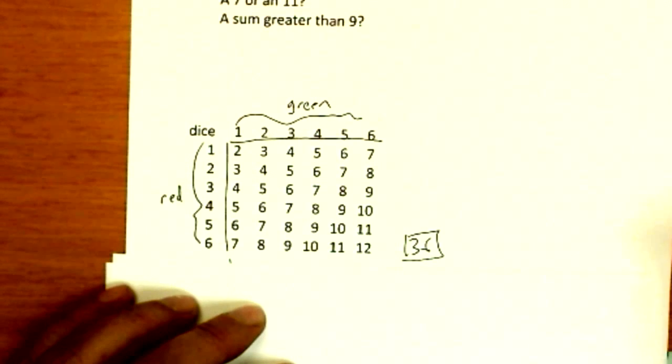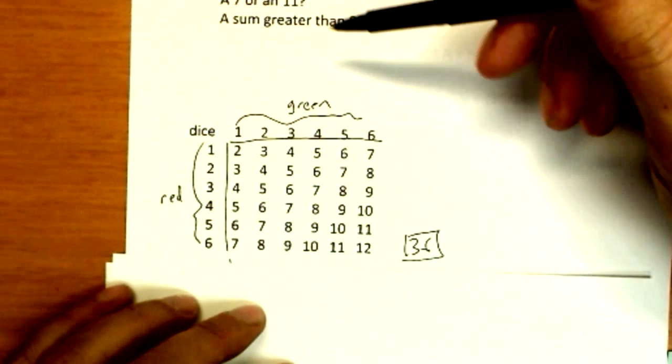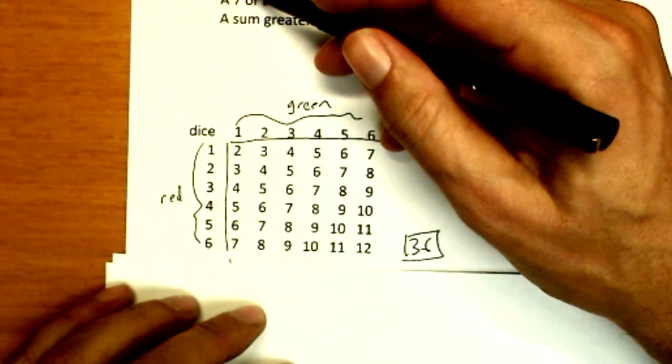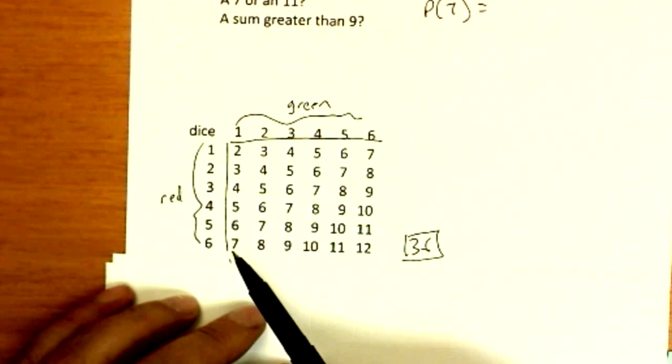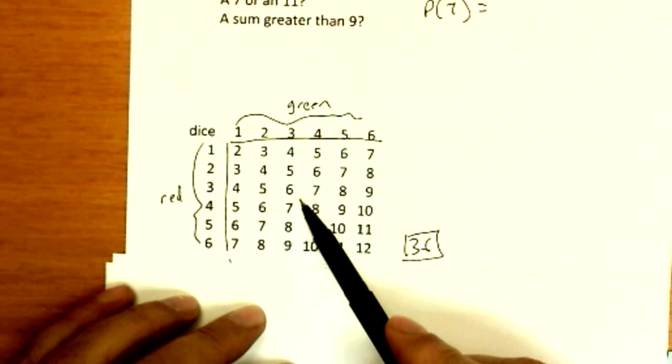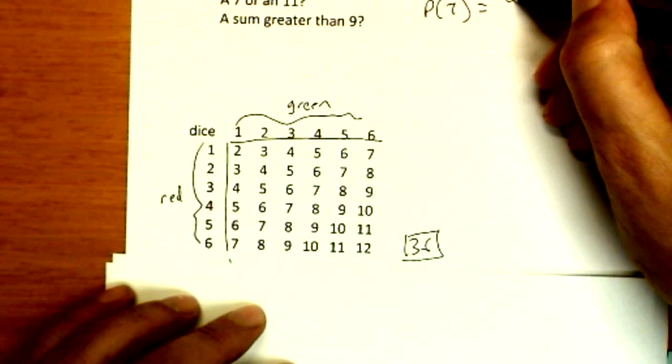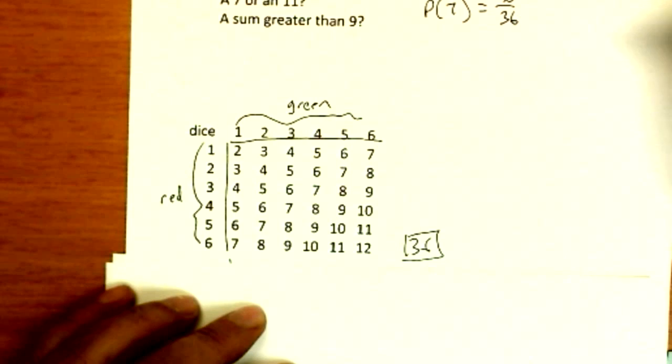Now, what does this all mean to us? When I have equally likely outcomes, I can begin counting things up. So the probability of getting a seven, just a seven. Well, how many ways can I get a seven? One, two, three, four, five, six. Or six out of my 36 ways, one-sixth of the time.